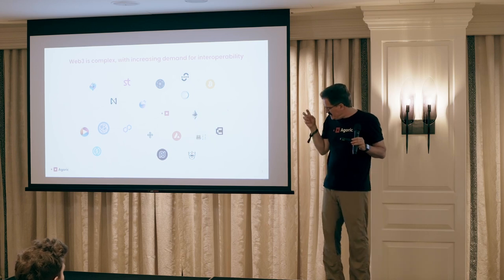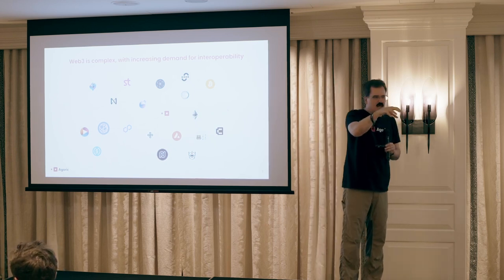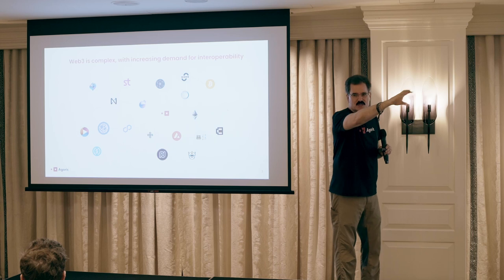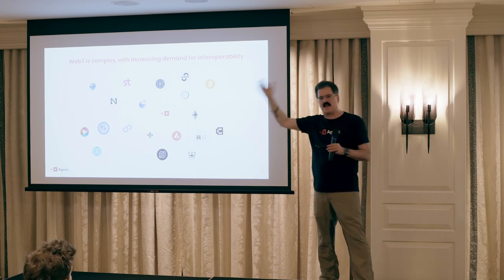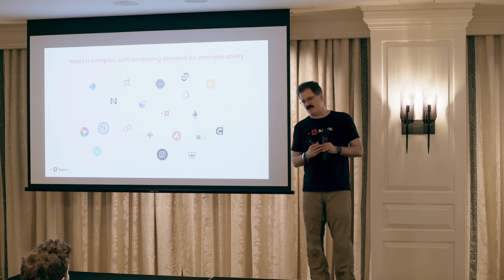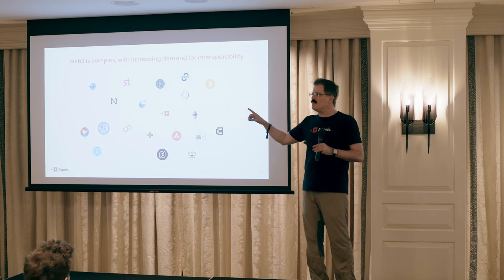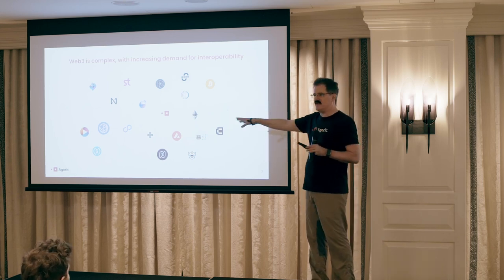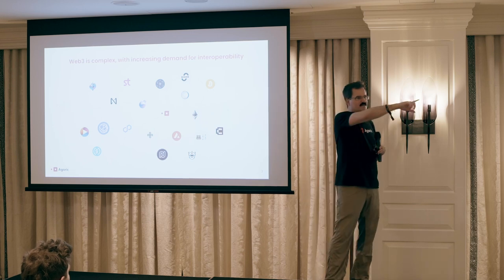If I have USDC and I want Celestia token staked, I've got to move USDC over a bridge from Ethereum to Cosmos, move it over to Osmosis, sign a swap, move it over to Celestia, and then sign a stake transaction — all these operations manually, one by one.